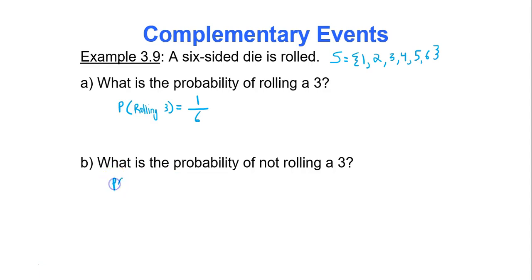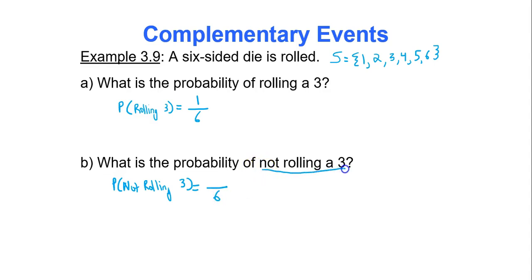Now what is the probability of not rolling a three? Out of the six outcomes, how many are not three? There are five of them: one, two, four, five, and six. So the probability of not rolling a three is five out of six.